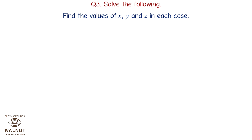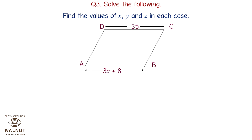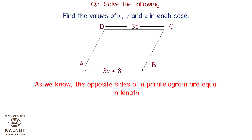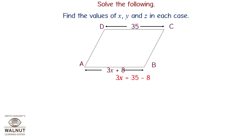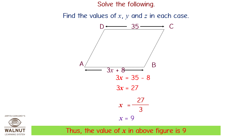Find the value of X. Since opposite sides of a parallelogram are equal in length, side AB equals side DC. So 3X plus 8 equals 35. Therefore, 3X equals 27, and X equals 9. The value of X is 9.